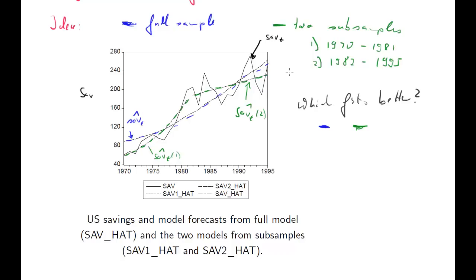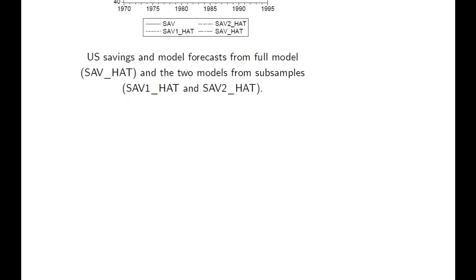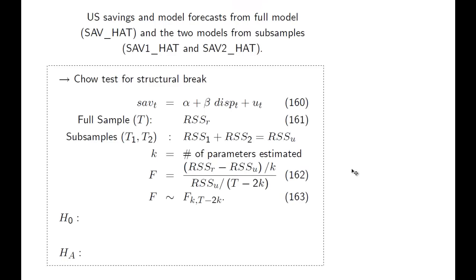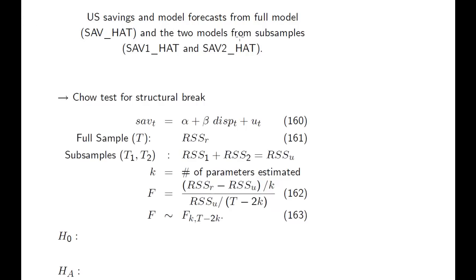So which one fits better? Now we can eyeball this, but really what we want is a formal test. But the basic idea is the same. We will have two sets of regressions. We regress our model on full sample, we regress it on the subsamples, and then we compare the fit. And this is what we then call the Chow test. Now we will use in the end an F-test, as you can already see.